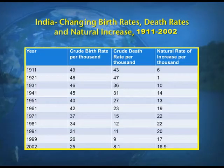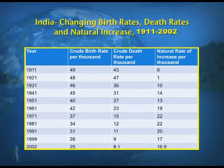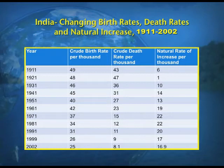This table shows the changing birth rates and death rates resulting in the natural increase in population. The four columns cover census years, crude birth rate per thousand, crude death rate per thousand, and the natural rate of increase per thousand. In 1911, the natural increase was only 6, as the birth rate was 49 and death rate was 43.